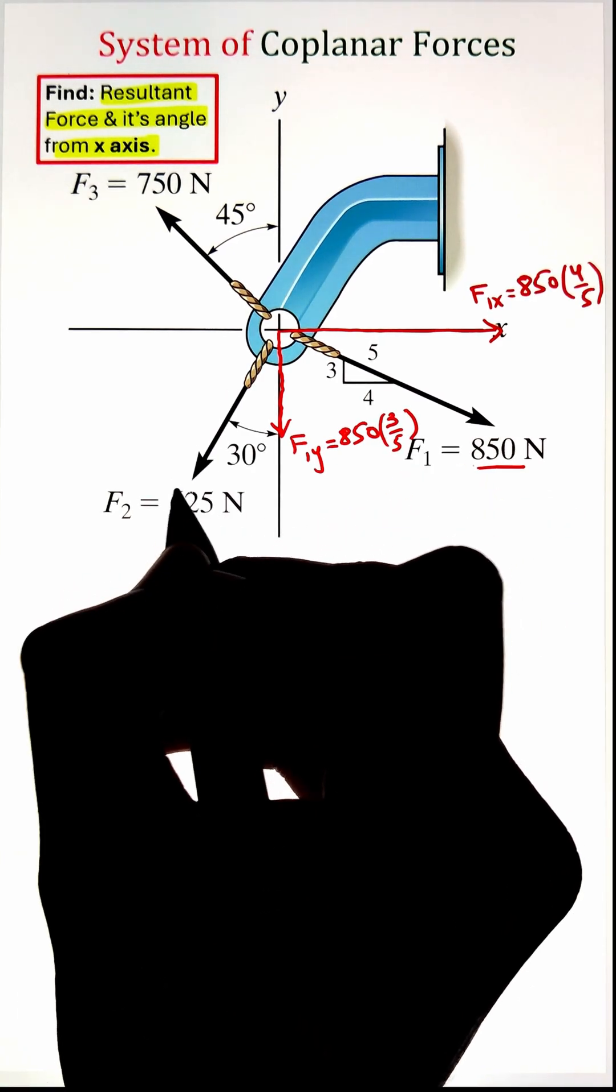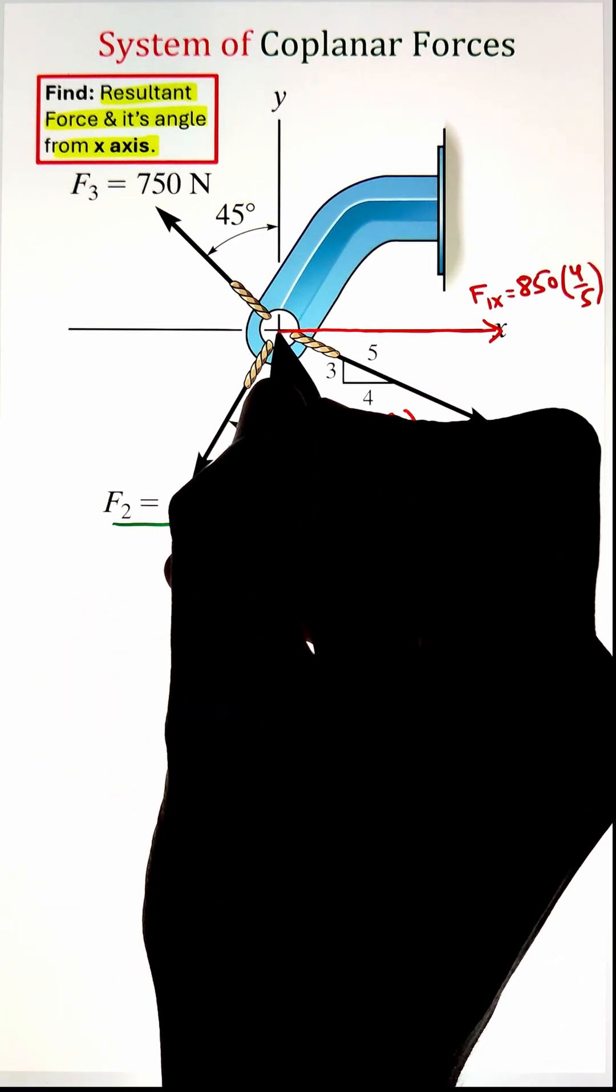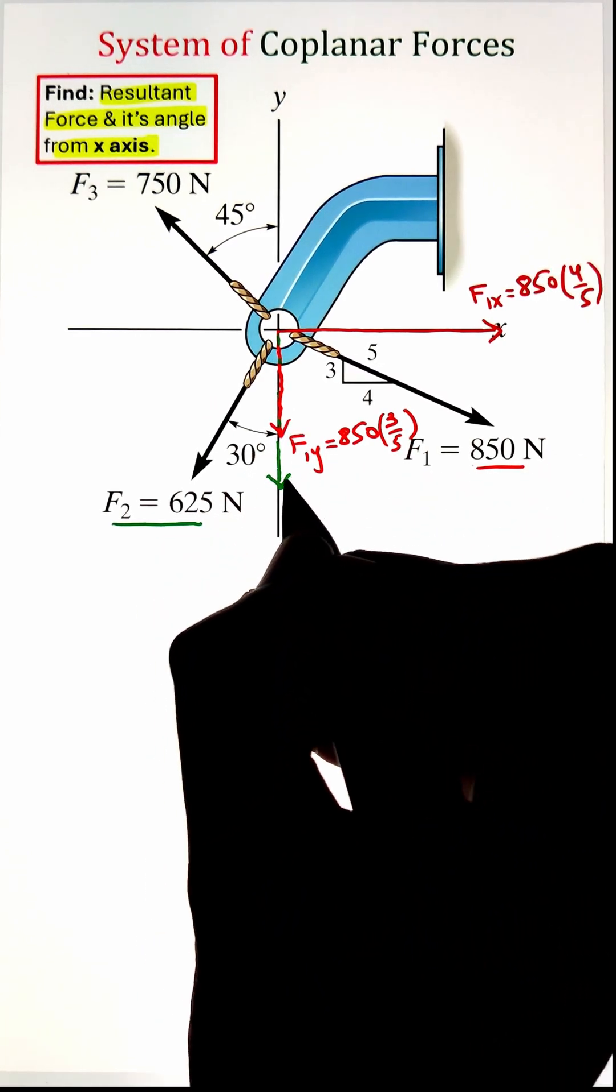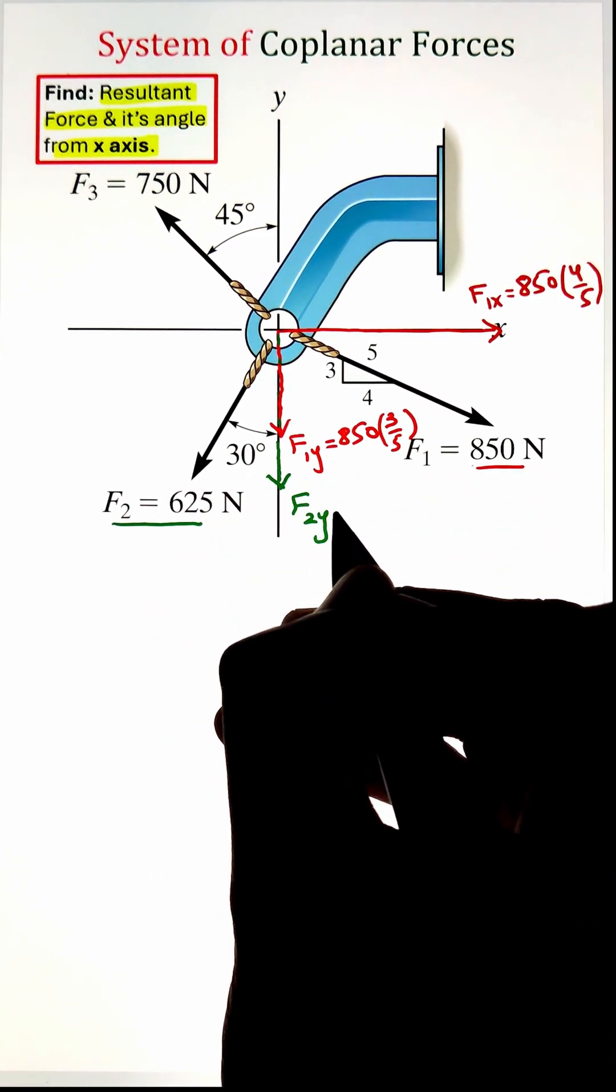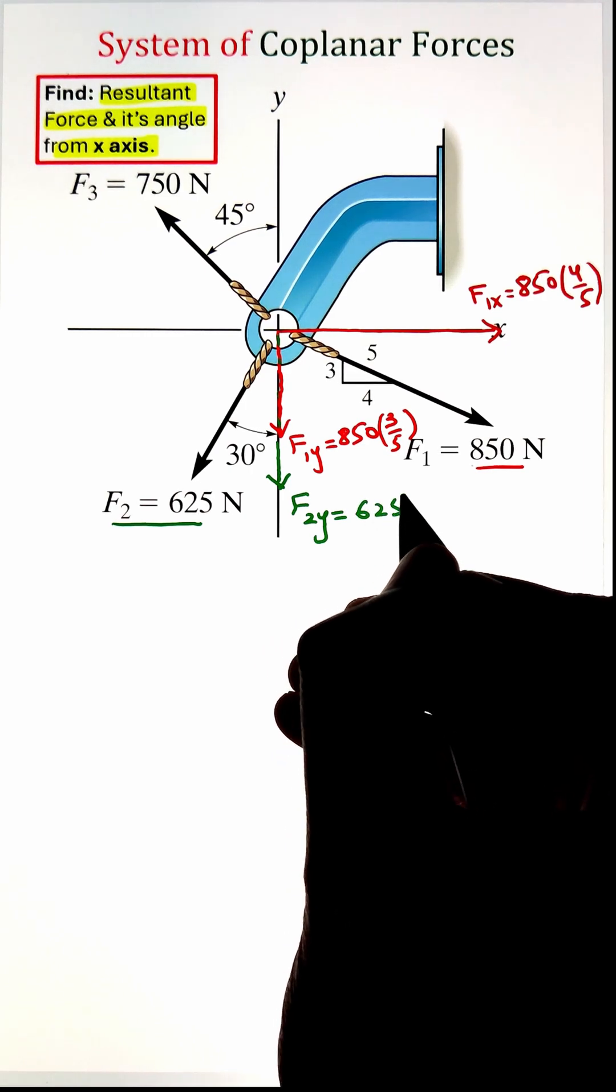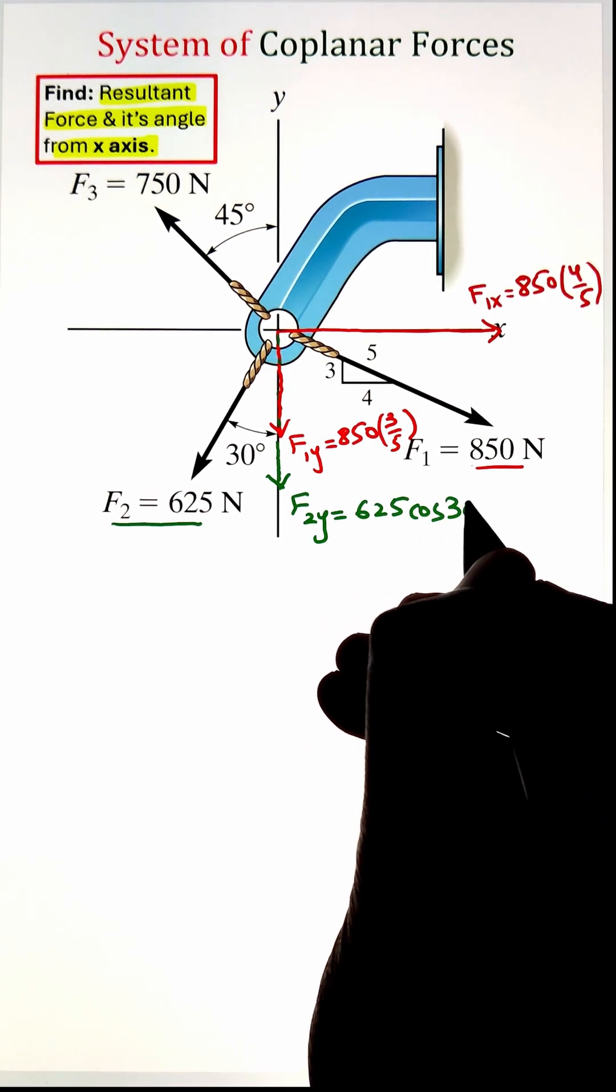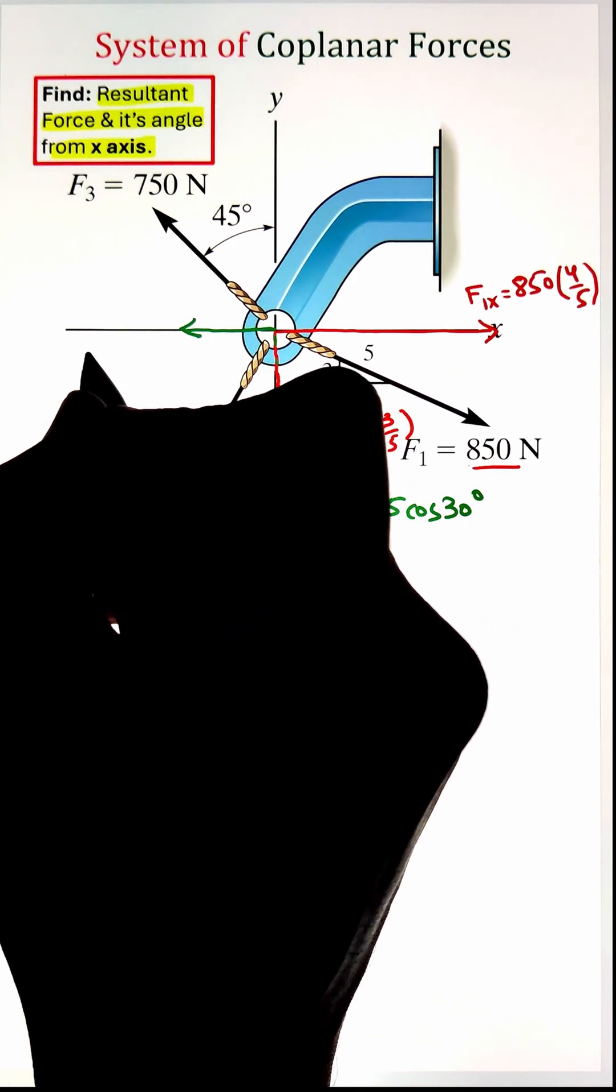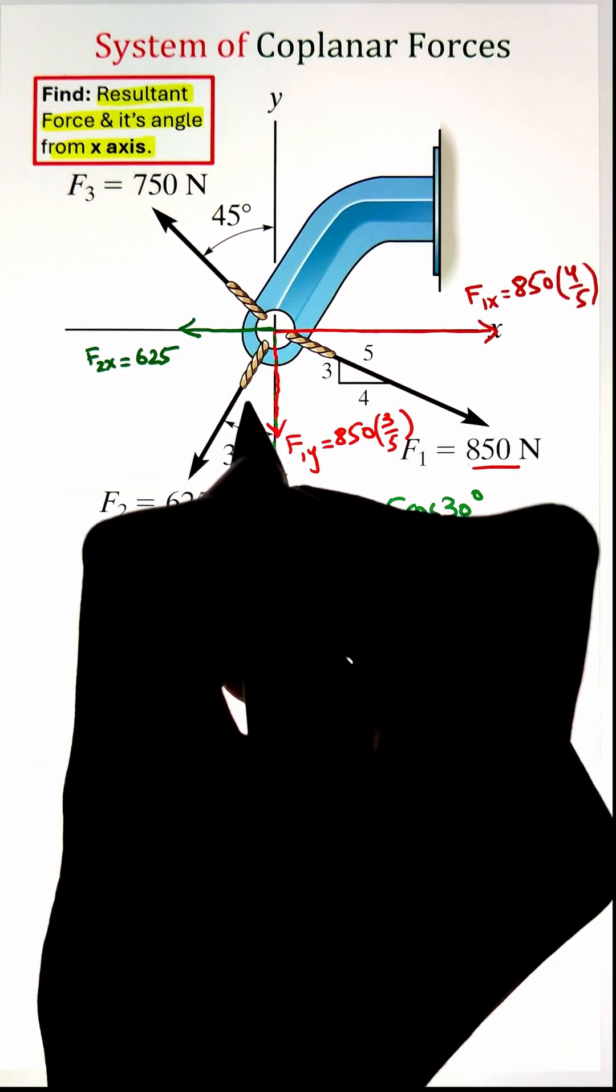Next, our force F2 that is making an angle of 30 degrees with the vertical y-axis gets converted into its rectangular components by taking the cos function of angle 30 degrees that will create a component along the vertical axis, while the sin 30 will give us a component along the horizontal x-axis.